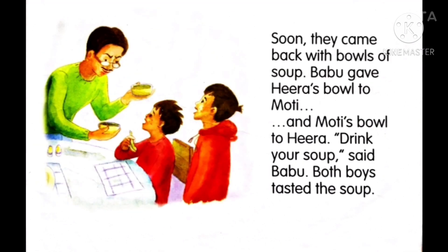Soon they came back with bowls of soup. Babu gave Hira's bowl to Moti and Moti's bowl to Hira. 'Drink your soup,' said Babu. Both boys tasted the soup. Father interchanged their bowls — one bowl given to the other and the other bowl to the other. Both boys tasted each other's soup. What do you think happened? Did it ever happen with you like this? Can you guess what may happen next?